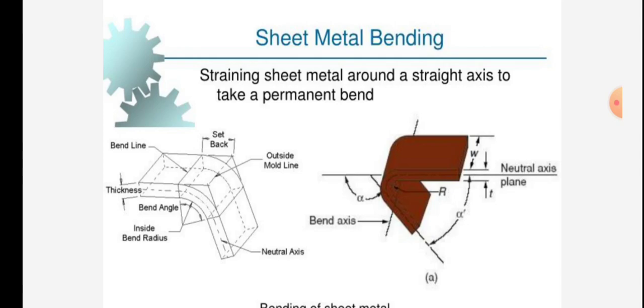Bend line is given. Thickness is given. Bend angle is given. Inside bend radius is given. Sheet blank is given. Outside mold line is given. Neutral axis is given.